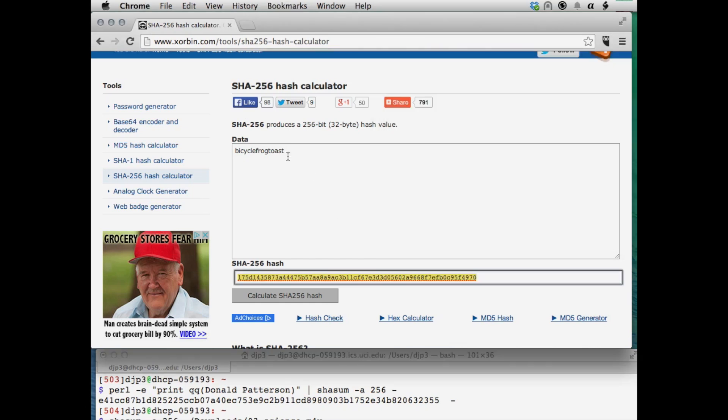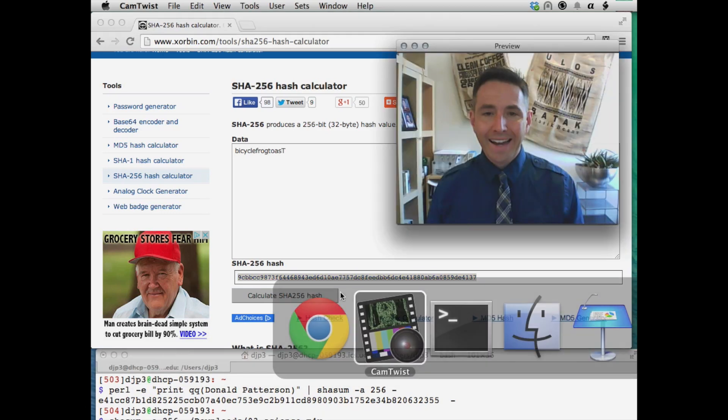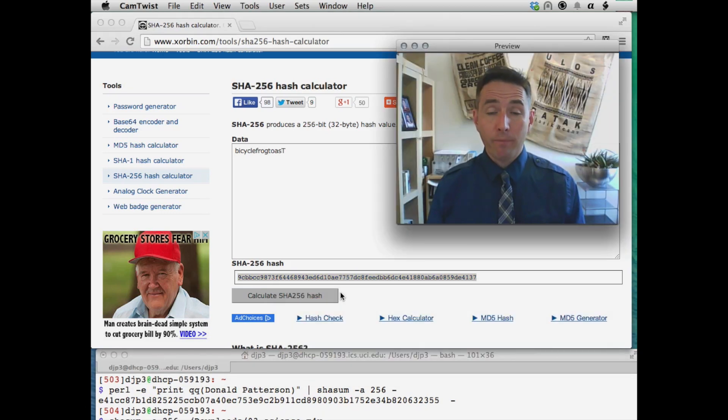Another thing that you can see is that if you change something even slightly, so let's change the last letter of frog toast to have a capital T. When we recalculate the sum, remember that this sum starts 175 and ends 970. If we calculate the hash of that, well now it's completely different. It starts with completely different characters and it ends with completely different characters. So it's very radically different than the same fingerprint of a very similar password.